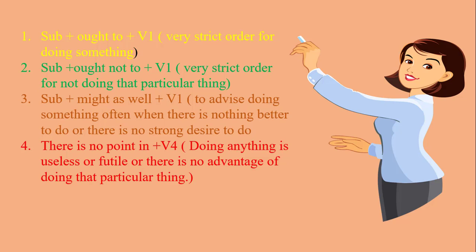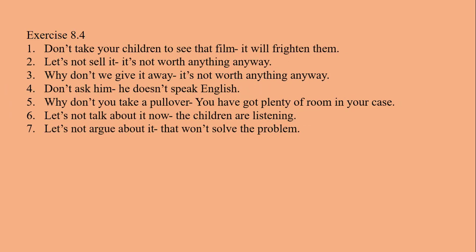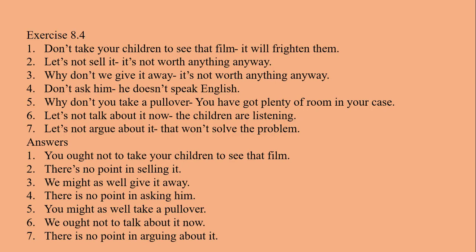There are seven questions with seven answers. The first question is: 'Don't take your children to see that film — it will frighten them.' This question gives an order not to take children to see the film. If they take the children, the film will frighten them, meaning the action should not be done. So we use the second structure: subject + ought not to + V1.